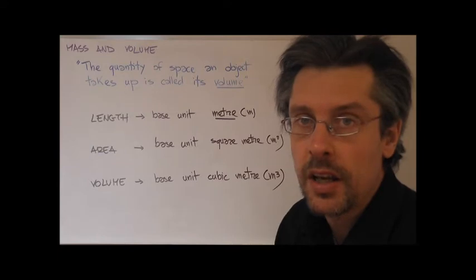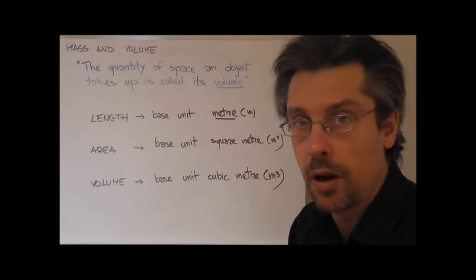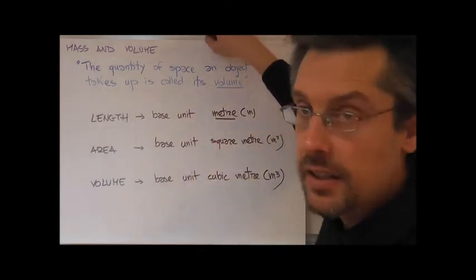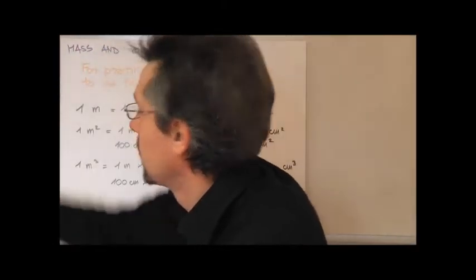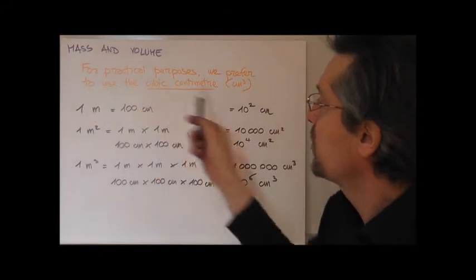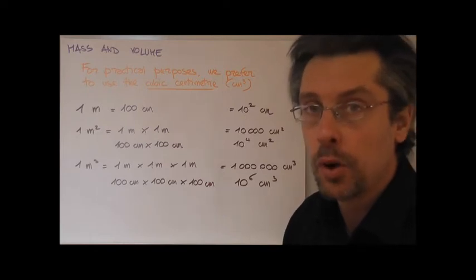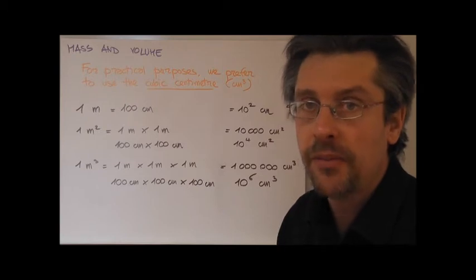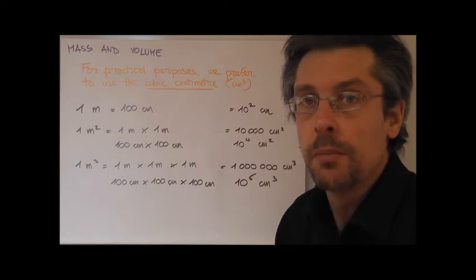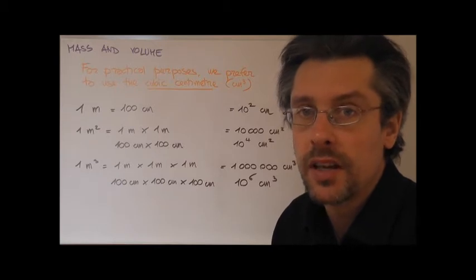Now, it's important to see how we can convert from the base unit to the subunit of volume. And it's not as easy as it was for the base unit for length. First of all, the base unit for mass is a kilogram, but we're going to measure most of the time masses in grams. In the same fashion, the base unit for volume is a cubic meter, but most of the time we're going to use, for simplicity, the cubic centimeter.